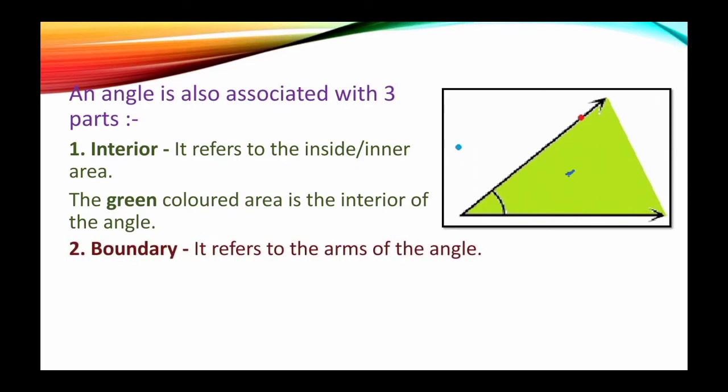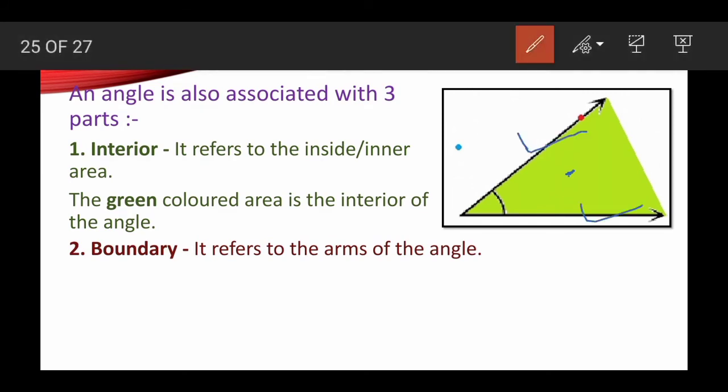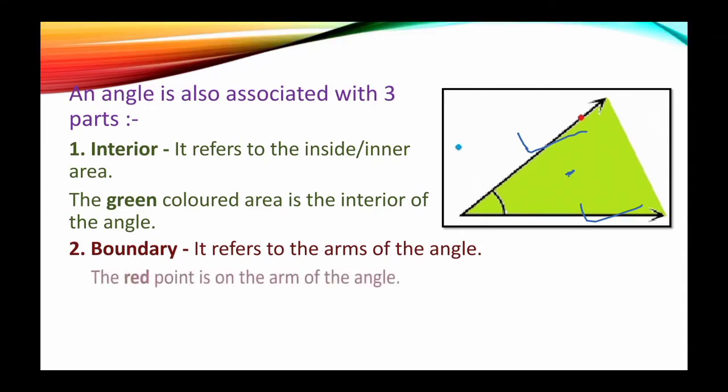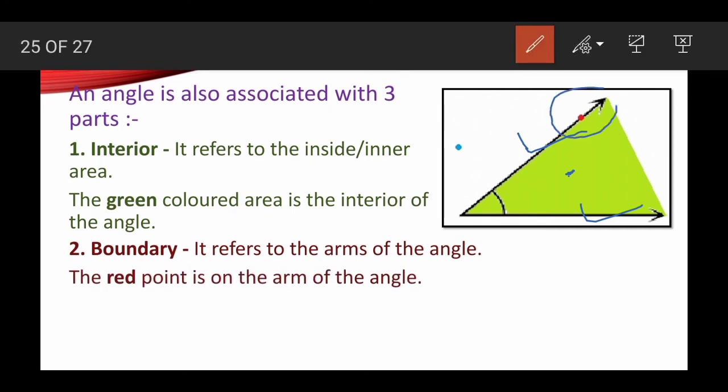Now come to the boundary. It refers to the arms of the angle. Here there are two arms. These are the two arms, this and this. So if any point is present in these two arms, then you can say that it is present on the boundary. Here the red ink, the red point on the arms, look at here, here the red point on the arm represents the boundary of the angle. This point is present on the boundary of the angle.